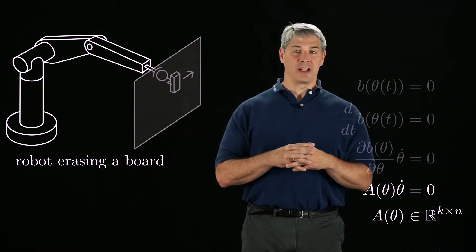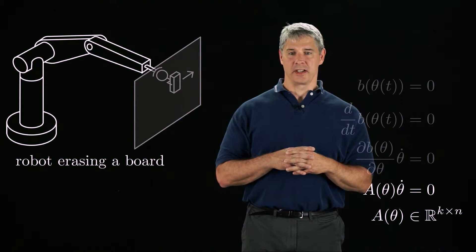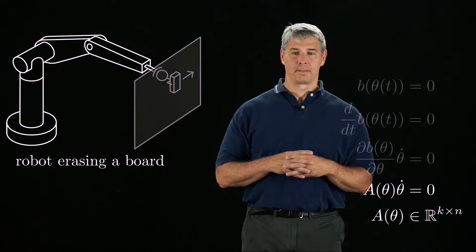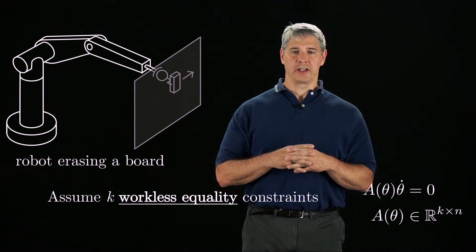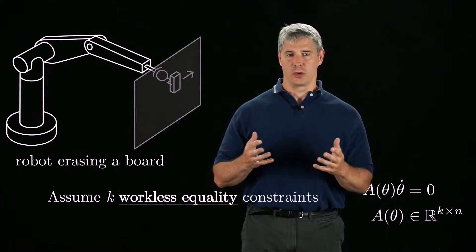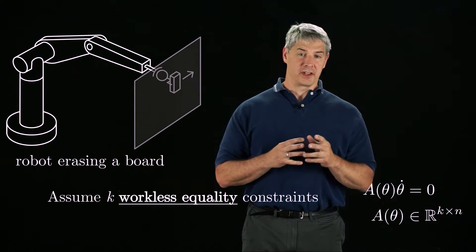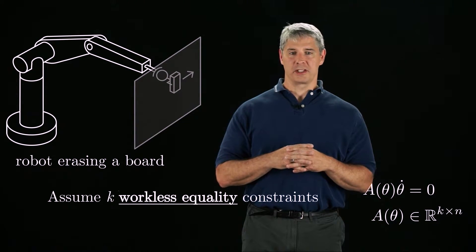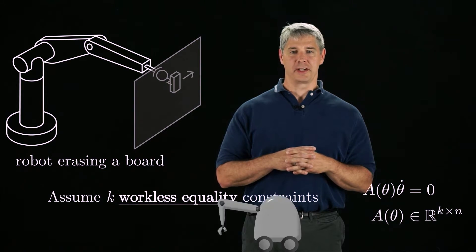These Pfaffian velocity constraints can also represent non-holonomic constraints, as discussed in chapter 2. We assume these k equality constraints are workless, meaning that the forces that enforce these constraints do no work on the robot. For the example of the robot erasing the board, this means that there is no friction between the eraser and the board.